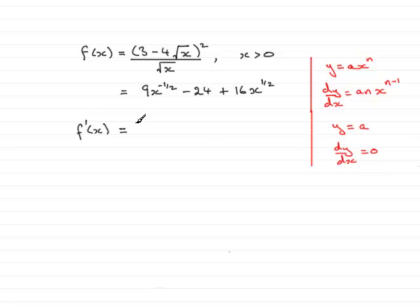So it should be no problem to differentiate each of these three terms. We start with the first term. All we've got to do is multiply the power with the number at the front, so that's going to be -9/2. Then reduce the power by 1, so you've got x^(-3/2). Don't write minus 1 and a half - write it as -3/2, minus 3 halves.